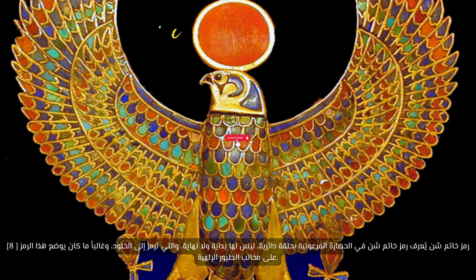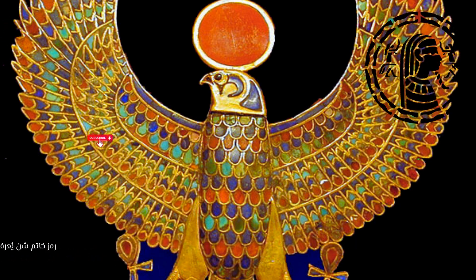Eight: the Shen ring symbol. In the Pharaonic civilization, the Shen ring is a circular ring which has neither beginning nor end, symbolizing eternity. This symbol was often placed on the claws of divine birds.